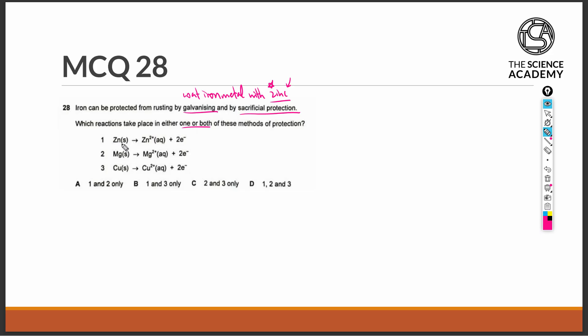Statement 1 states that zinc metal is oxidized into zinc 2 plus ions. This is going to be the case in galvanizing and also in sacrificial protection when zinc is used as the sacrificial metal to protect iron from rusting. So instead of iron, zinc is now the one that will be oxidized, in this case into zinc 2 plus ions.